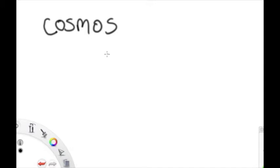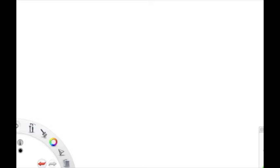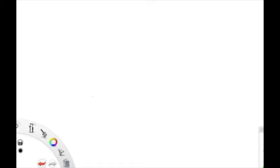The root of the word is in two other words. First word cosmos, the second word vision. Etymologically, it's a combination of the Greek cosmos, which means order or world, and which we now understand as universe, and also a Latin word, videre, meaning to see.